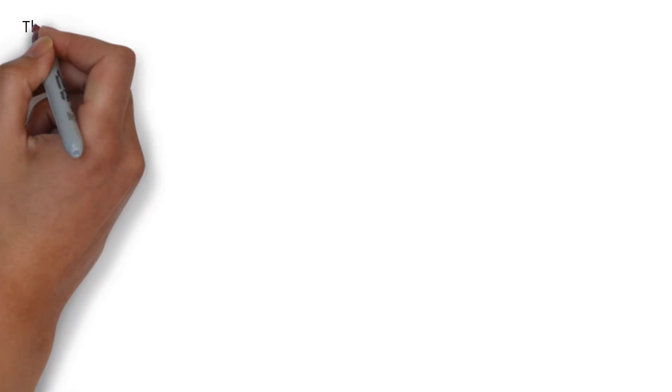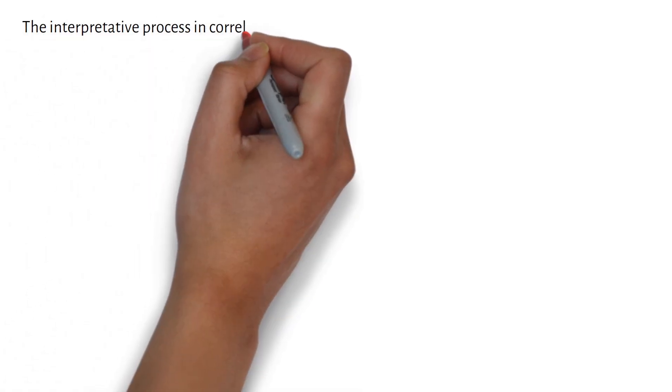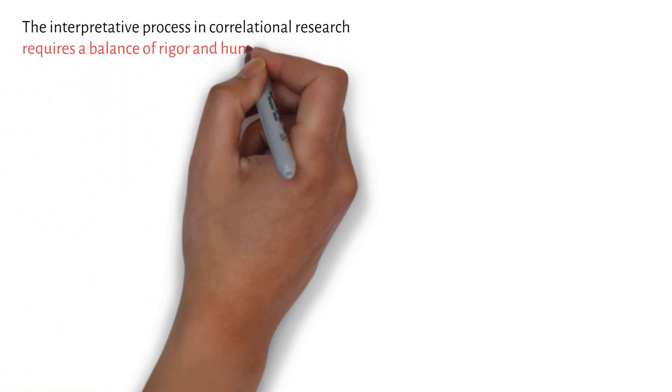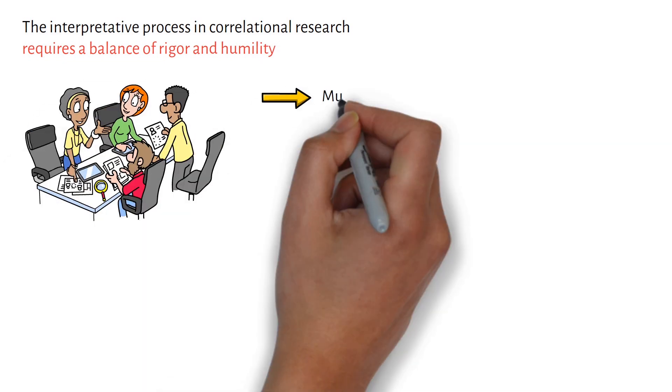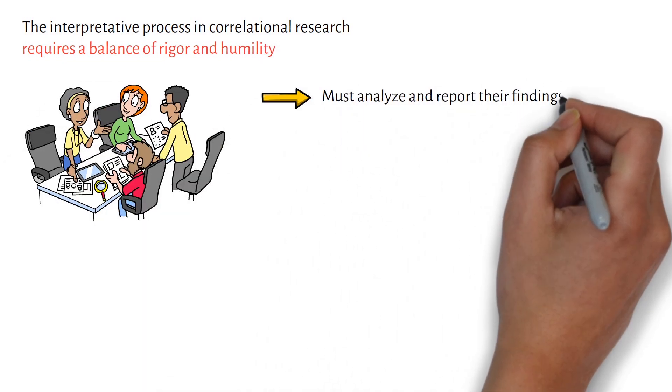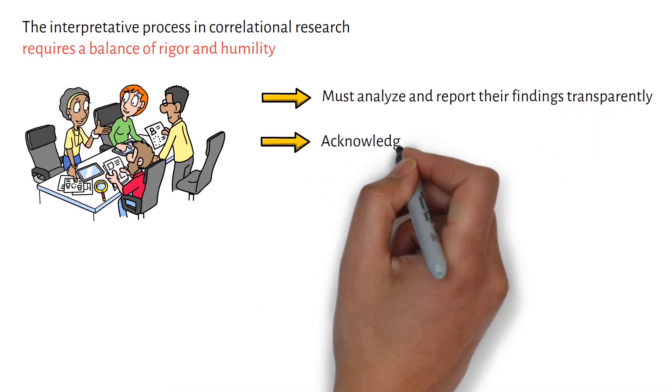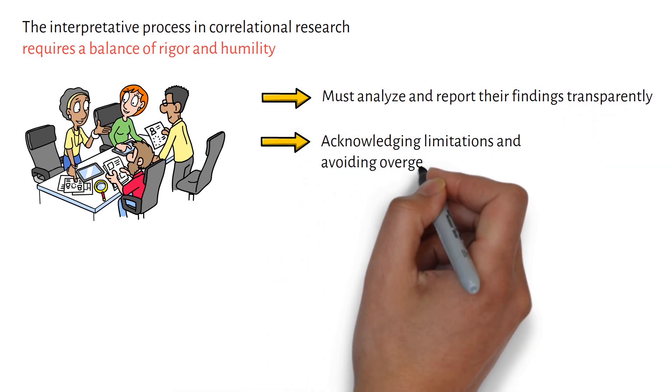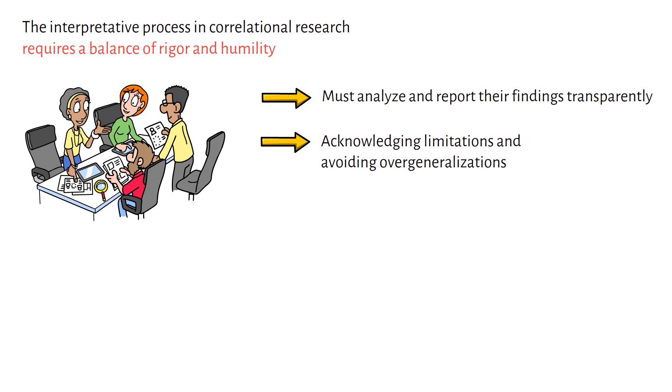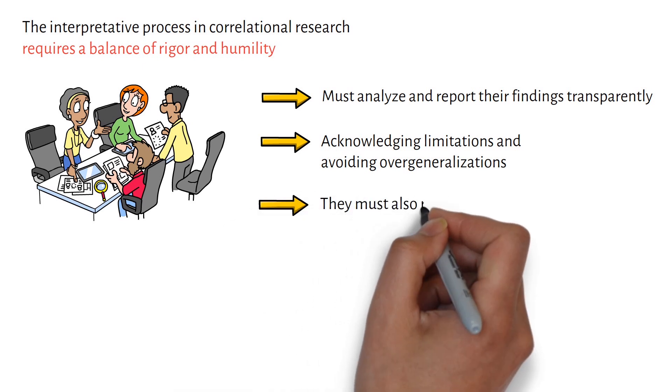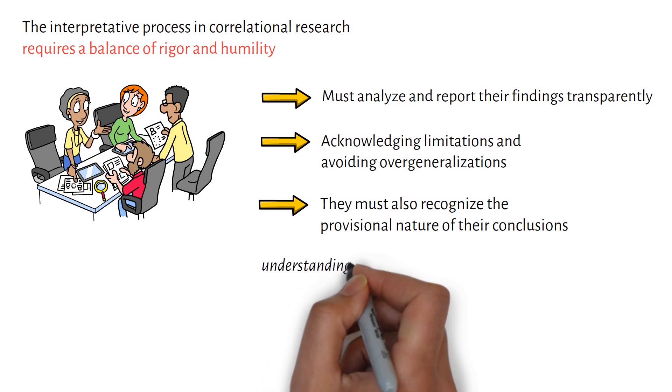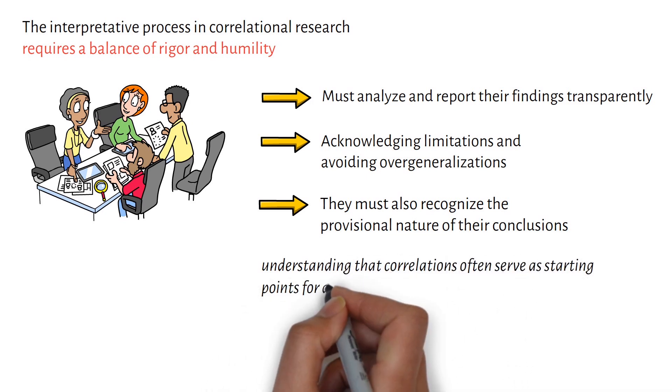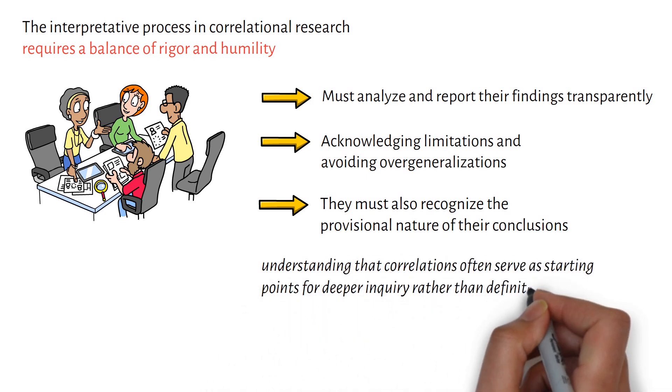The interpretative process in correlational research requires a balance of rigor and humility. Researchers must analyze and report their findings transparently, acknowledging limitations and avoiding overgeneralizations. They must also recognize the provisional nature of their conclusions, understanding that correlations often serve as starting points for deeper inquiry rather than definitive answers.